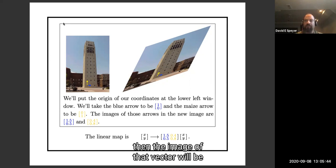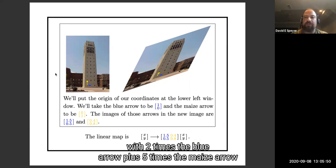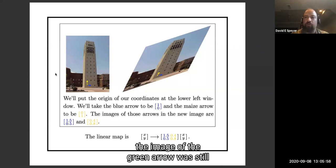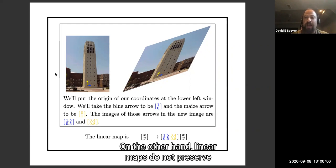That's why we saw that the green arrow was two times the blue arrow plus five times the maize arrow. And after I applied the linear map, the green arrow, the image of the green arrow was still two times the image of the blue arrow plus five times the image of the maize arrow. On the other hand, linear maps do not preserve lengths and they do not preserve angles.